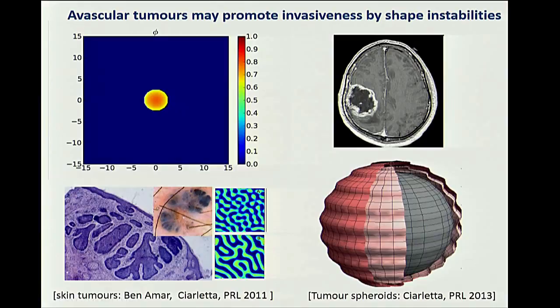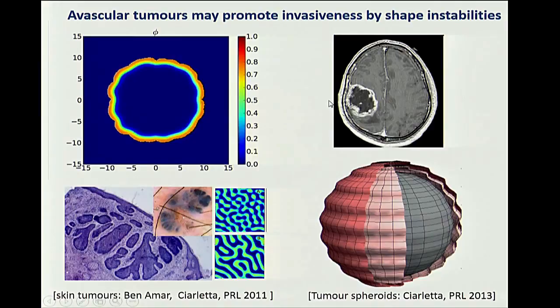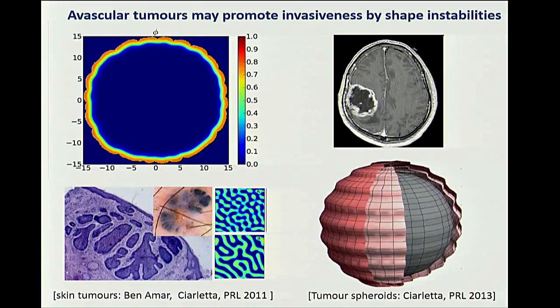This use of instabilities to change material properties is also seen in tumors. Skin tumors are detected by irregularity — by phase separation inside, creating spots. Even in solid tumors like the glioblastoma shown here: when a tumor cannot grow further because there is too much external stress, it develops an instability by compression and can escape, promoting metastasis.